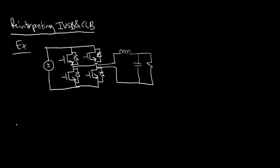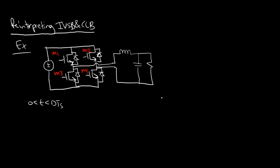To do that, we should really define these four switches. I'll call this M1, M2, M3, M4. The two states are: M1 and M4 are on in one state, and M2 and M3 are on in the other state.